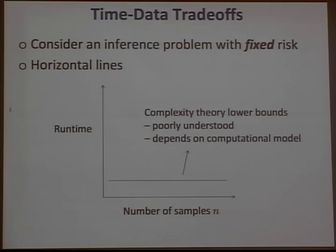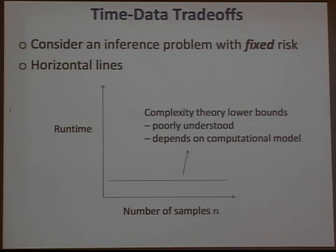The complementary question involves horizontal lines: what is the minimum computation required, given access to an unbounded amount of data, to obtain your fixed risk? You need to account for computation required to access data and even basic pre-processing. This question, even in computer science, is not as well understood — it is the central open question in complexity theory, and it depends on the computational model.